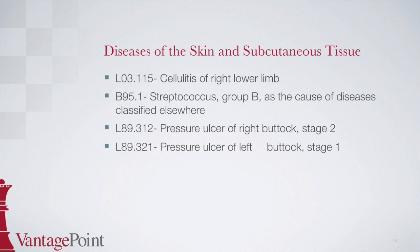The first code is L03.115, cellulitis of right lower limb. Since documentation states that the patient was seen for treatment of cellulitis, this code goes first as it is the reason for the visit. Unless the guidelines state otherwise, the reason for the visit should be coded first. To locate this code, start at cellulitis in the alphabetic index, then find knee indented below. There is a note next to knee stating 'see cellulitis lower limb.' After finding lower limb, we are directed to code L03.115. In the tabular, subcategory L03.115 is for cellulitis of other parts of limb — the right lower limb is L03.115.